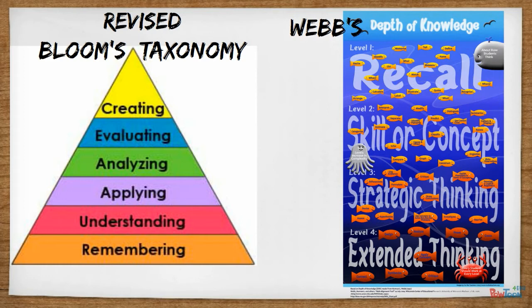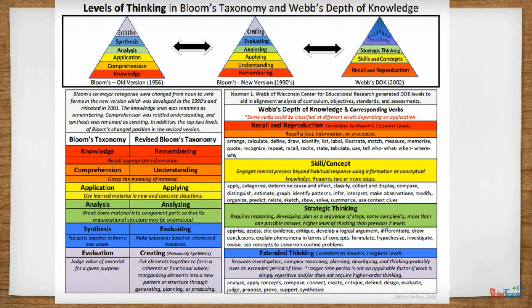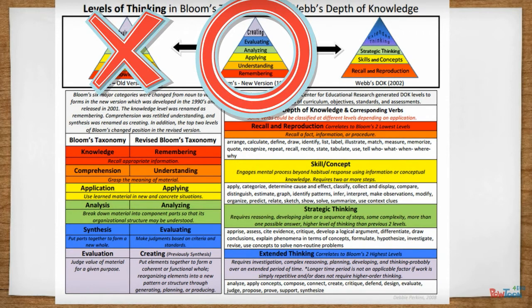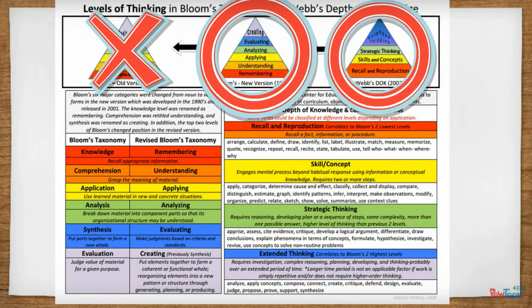The original Bloom's Taxonomy was introduced in 1956 and became a widespread standard for planning instruction aimed at engaging students in various levels of thinking to improve higher order thinking skills. After decades of classroom use, educational researchers made some changes to the original taxonomy to make it more useful, hence Revised Bloom's Taxonomy. Around this same time, Norman Webb was developing a structure for aligning educational standards, curriculum, and assessment — and voila, Webb's Depth of Knowledge, a.k.a. Webb's DOK.